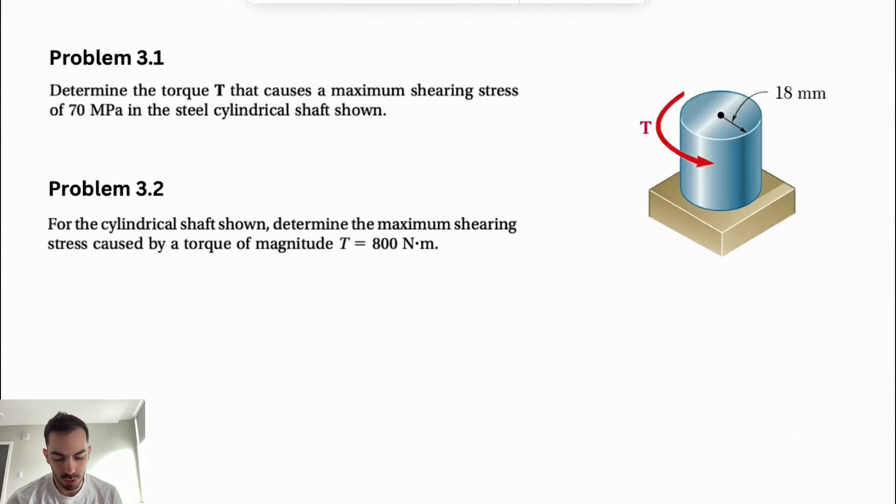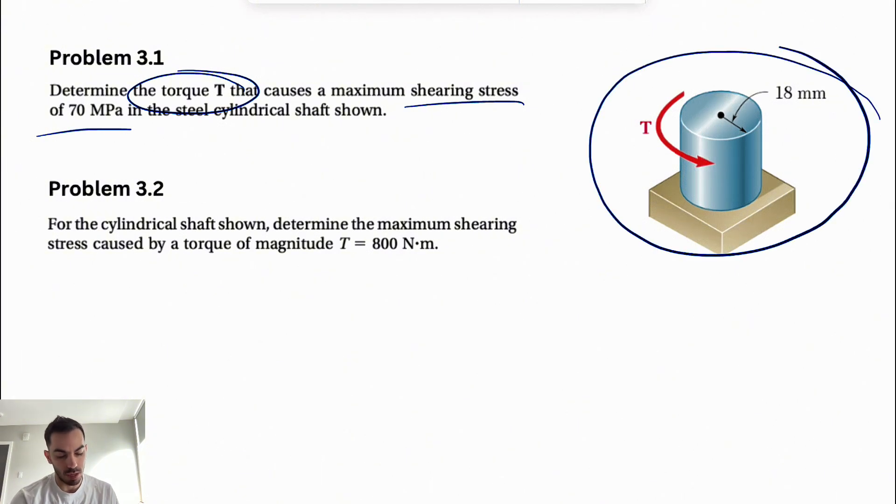All right guys, welcome back. We're going to be solving the first and second questions from the third chapter of Mechanics of Materials by Beer, Johnston. The first question asks us to determine the torque T that causes a maximum shearing stress of 70 megapascals in the steel cylindrical shaft shown.